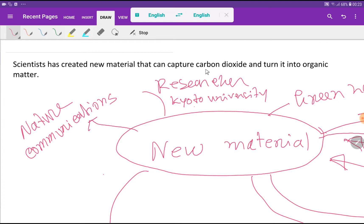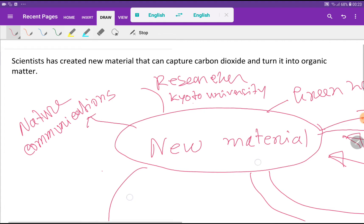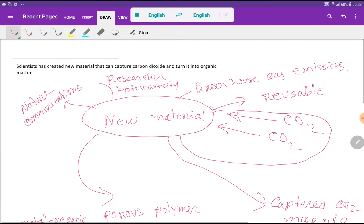As a result, the temperature of this earth is increasing and climate change is happening. Carbon dioxide is a problem, but the hope is that scientists has created a new material. And this new material can have the ability to absorb carbon dioxide selectively.